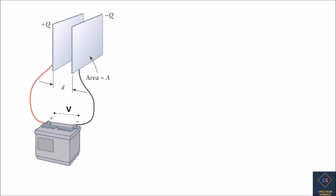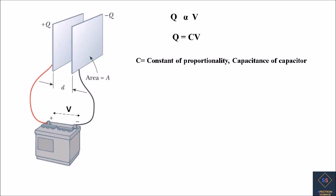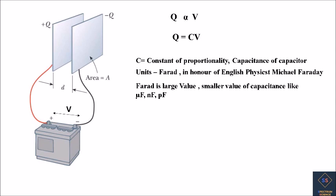When a voltage source V is connected to the capacitor, the source deposits a positive charge Q on one plate and a negative charge minus Q on the other plate. The amount of charge stored is proportional to the applied voltage, which can be written as Q equals CV, where C is the constant of proportionality called the capacitance of the capacitor. The unit of capacitance is the Farad, named in honor of English physicist Michael Faraday. Since the Farad is very large, we use microfarad, nanofarad, or picofarad as units. This equation Q = CV can be rewritten as C = Q/V — that is, charge stored per unit applied voltage.